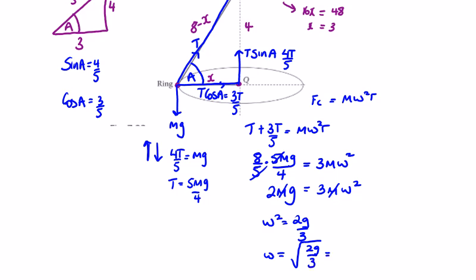So ω is the square root of 2g over 3, which is the square root of 19.6 over 3, or about 6.5. The square root of that on the calculator is 2.556, so 2.56 radians per second.